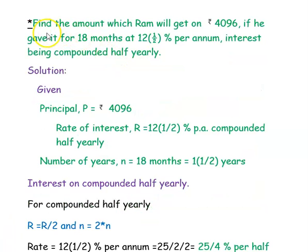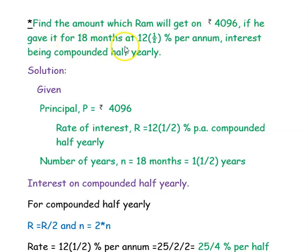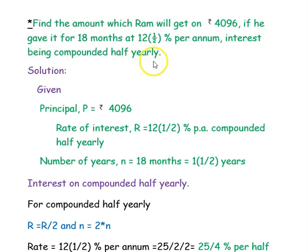The first example is: find the amount that Ram will get on Rs. 4096 if he invested it for 18 months at 12.5% per annum, interest being compounded half-yearly. Let's look at the solution.